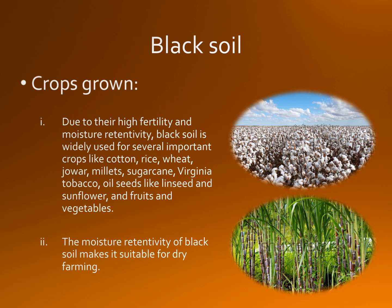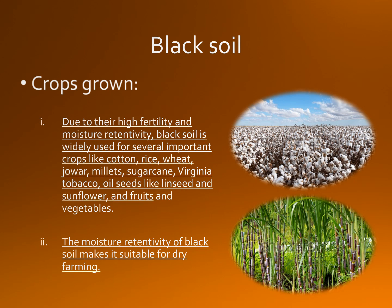Under irrigated conditions, it can be used for a variety of other crops including sugarcane, wheat, tobacco, and citrus fruits. In short, due to their high fertility and moisture retentivity, black soils are widely used for several important crops like cotton, rice, wheat, jowar, millets, sugarcane, Virginia tobacco, oil seeds like linseed and sunflower, and fruits and vegetables. The moisture retentivity of black soil also makes it suitable for dry farming.